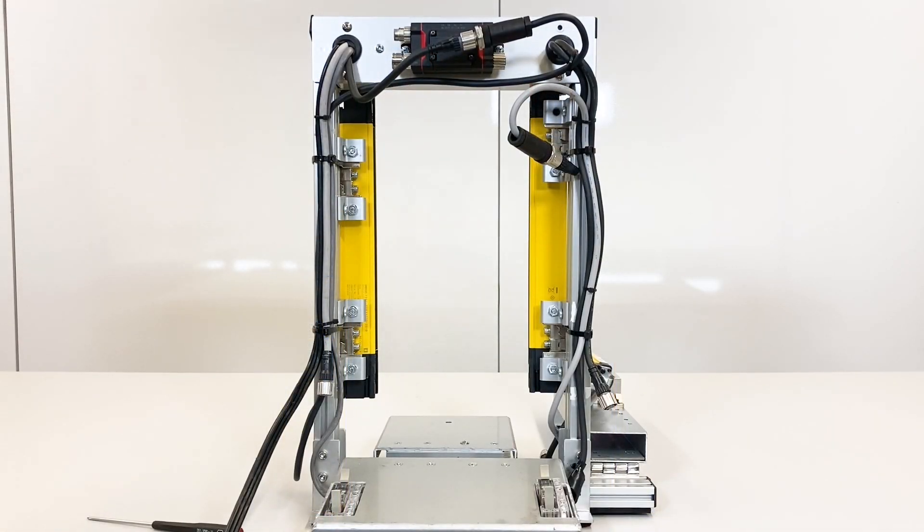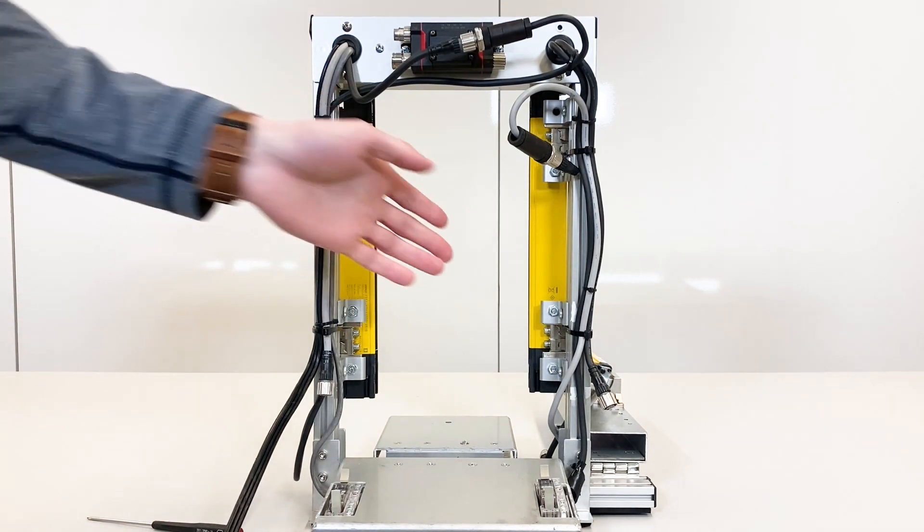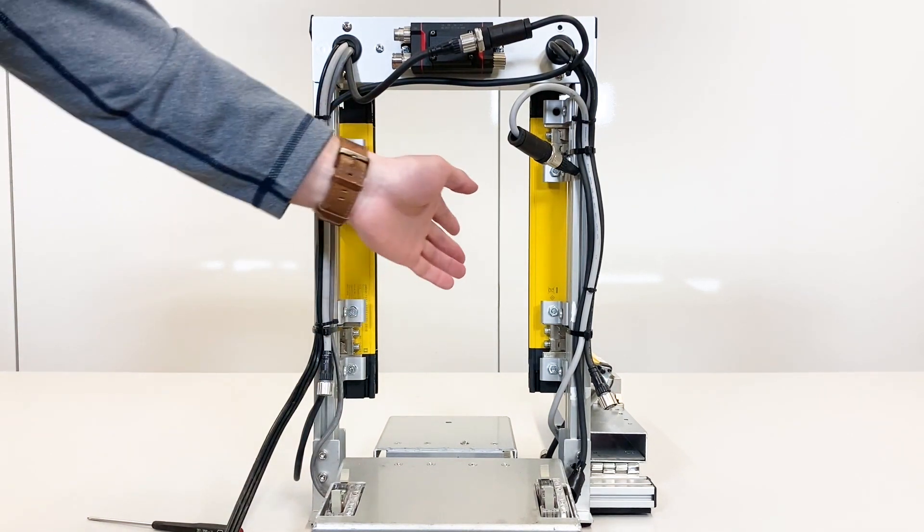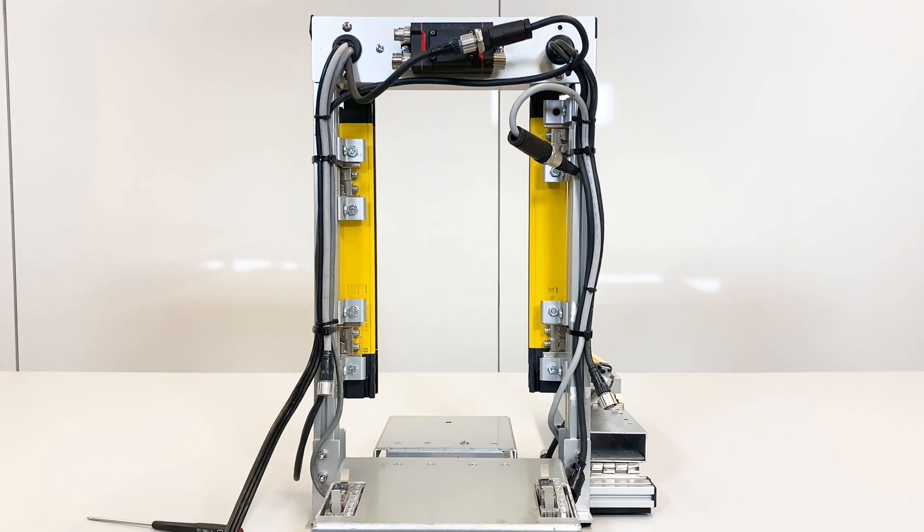So now your light curtain is programmed with EDM. And to confirm that everything is working properly, you can just pass your hand through the light curtain to make sure it is signaling output, which it is.